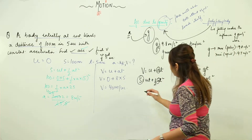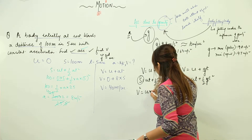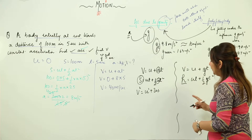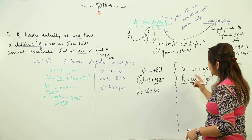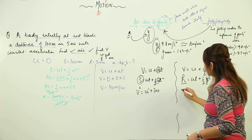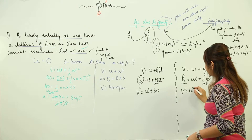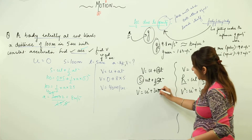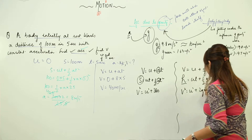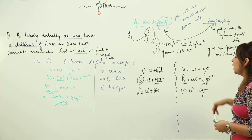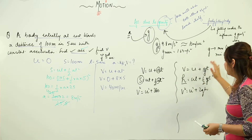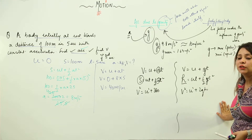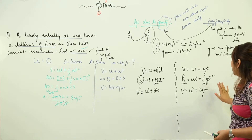The third equation v² = u² + 2as becomes v² = u² + 2gh — the only difference being that a is replaced by g and s is replaced by h. This is how we apply these equations in the case of gravitational force. These are Newton's equations of gravitation.